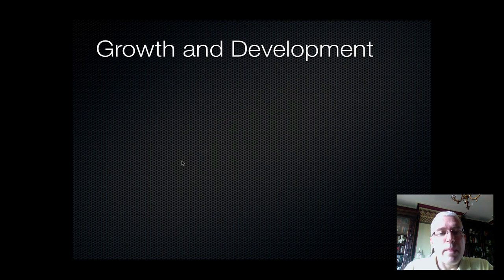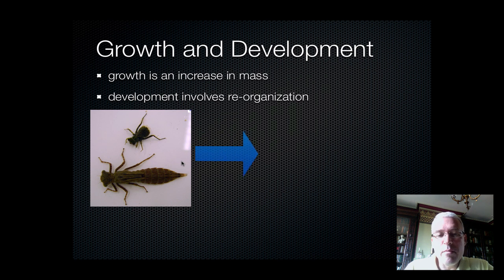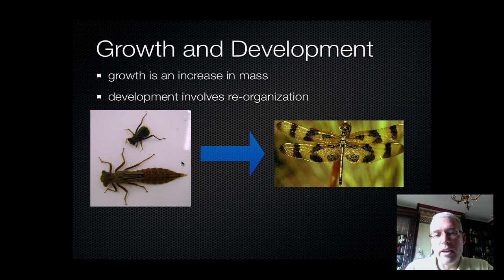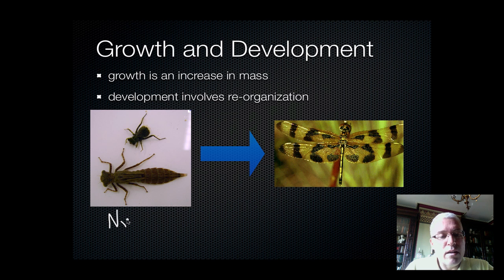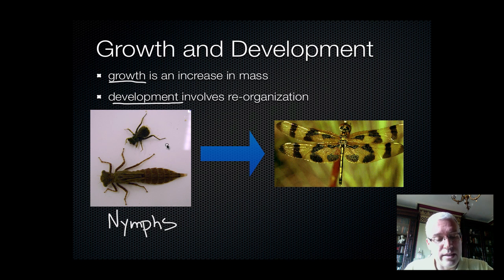Finally, growth and development. All living things grow and develop, and I'm going to put these two characteristics together because they're frequently talked about together. For example, in insects, these are the young of a dragonfly — they're called nymphs. They live underwater, and many of you have probably never seen dragonfly nymphs. These nymphs grow, they get larger, and they develop. They metamorphosize — or go through metamorphosis — to produce an adult flying creature that most of you are familiar with. This is a characteristic of all living things.